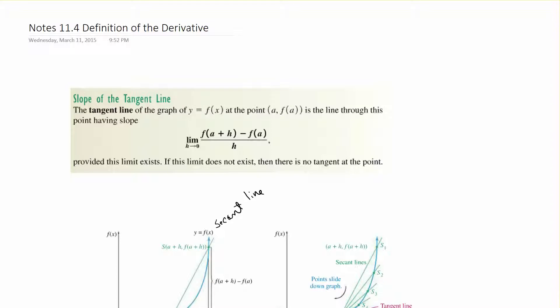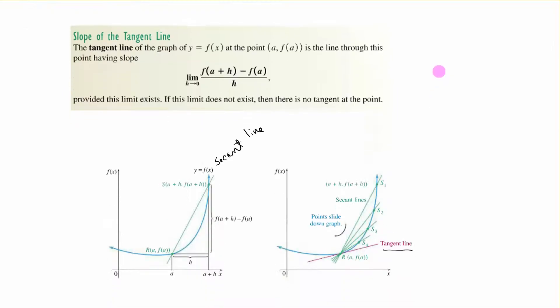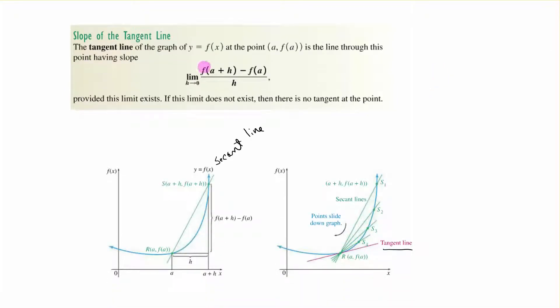This is section 11.4, Definition of the Derivative. We're going to talk about the slope of a tangent line. This is the formula you were given at the beginning: the slope of the tangent line is the limit as h approaches zero of f(a+h) minus f(a) all over h, at the point (a, f(a)).